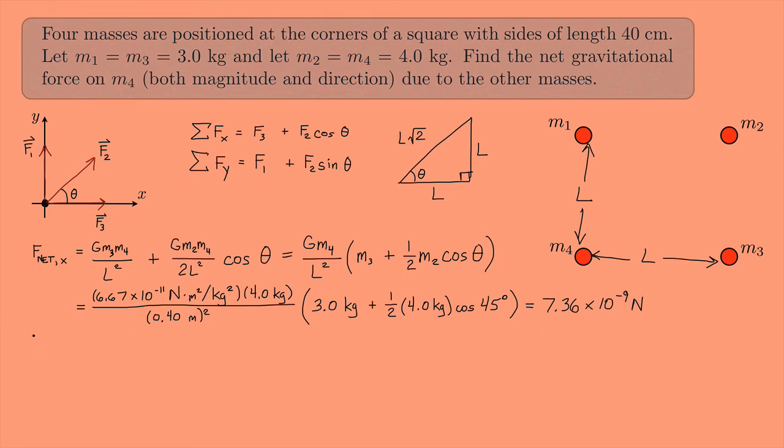What about the Y direction? So for the Y direction, I have F net Y. Well, first it's F1. So that's going to be G M1 M4 over L squared. Plus, and then I have this term right here, the F2, which actually is this thing right here. It's just now with a sine theta instead of a cosine theta. So I can just copy this here. It's G M2 M4 over 2L squared. And then instead of a cosine theta, I'm going to have a sine theta.